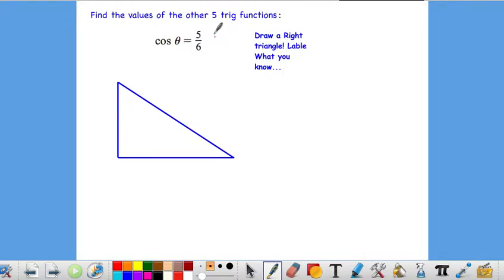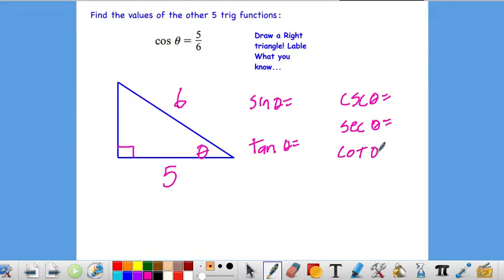So, if you're told that cosine of theta is 5 over 6, and you want to find the value of the other five trig functions, so you want to find sine, tangent, cosecant, secant, and cotangent, I recommend just drawing a right triangle. So, if we make a right triangle, we call this angle theta. Cosine refers to the adjacent side over the hypotenuse. So, that's a 5, that's a 6. So, now we want to write sine of theta, tangent theta, cosecant theta, secant theta, and cotangent theta.